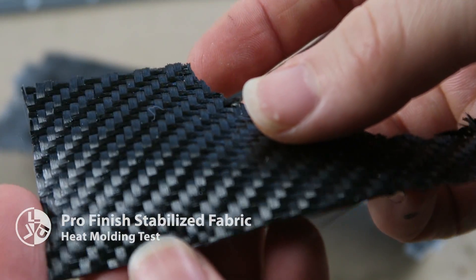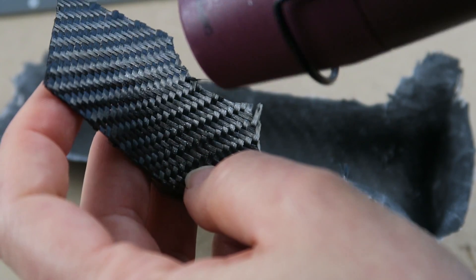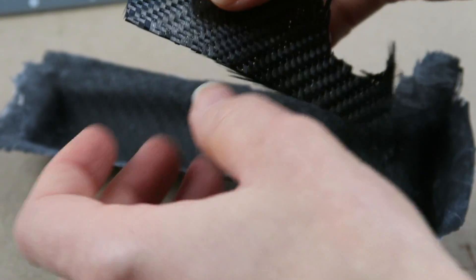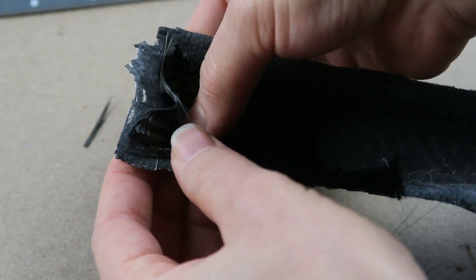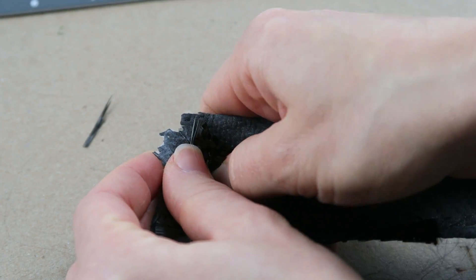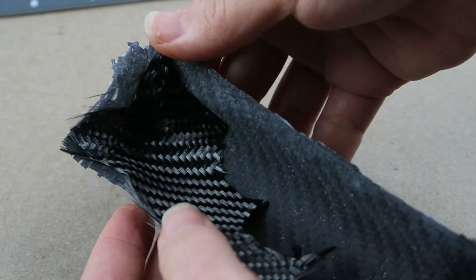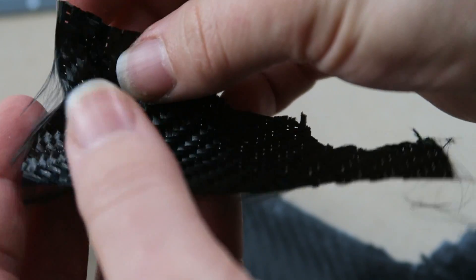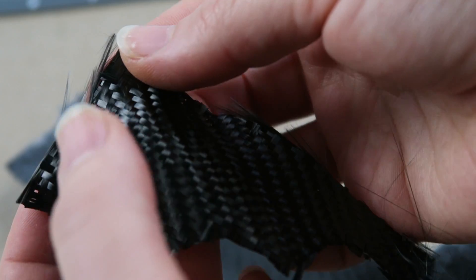Before we jump into applying the resin to these, there is one other feature that the ProFinish advertises, which is that it can be heat molded so you have a preformed shape and it's easier to lay up. I've tested it here using the heat gun and pressing it into this mold. It does take the shape and seems to hold it pretty well. That's a pretty good pop when you press in this indentation and then it pops back into place. This part I'm using for the molding test was created from the ProFinish.